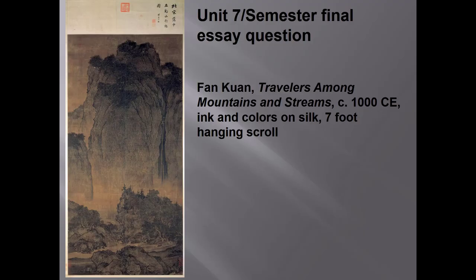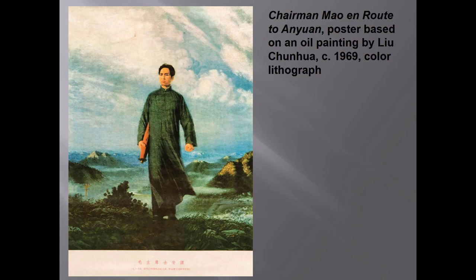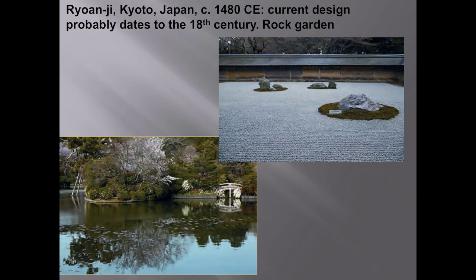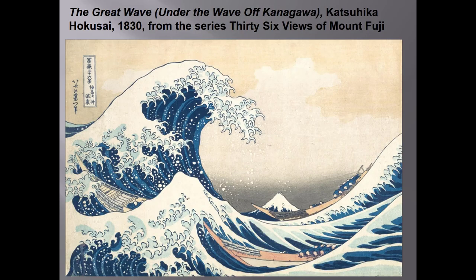You will not have an essay question on your Unit 7 test, but there will be a 30-minute Asian art question on your semester final. The question will ask you to analyze certain aspects of the Fan Quan landscape painting shown here. It will also ask you to compare it with one of the following works, and you'll need to choose one. You will only compare the Fan Quan landscape with one of these additional works.